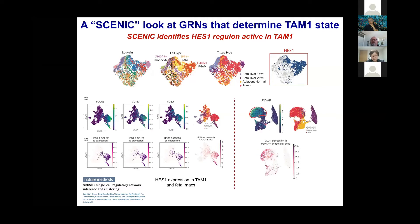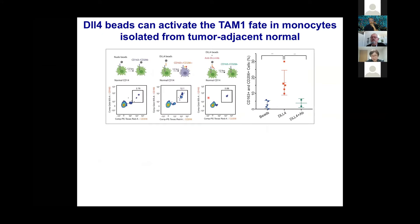If Notch is activated, where is the Delta or Jagged ligand coming from? The Delta ligand is coming from the same PLVAP-expressing endothelial cells. These fetalized endothelial cells express PLVAP and DLL4, which appears to interact with Notch2 on monocytes and reprogram them into fetalized tumor-associated macrophages via Delta-Notch signaling. We can show this functionally with in vitro assays using DLL4-coated beads co-cultured with monocytes isolated from normal adjacent tumor tissue.